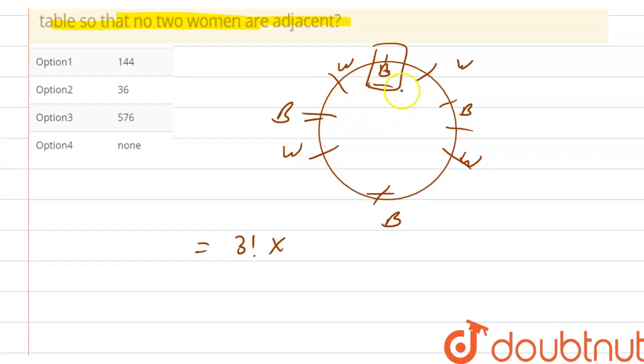Now let's talk about women. For women, we don't need to fix anyone because we already fixed one. So we can arrange them alternately. So for that, we have four: one, two, three, four. So for arranging four women, we have 4 factorial.